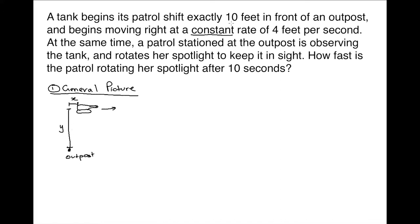I know that y is a constant 10 feet — that y distance doesn't change because the tank is only moving to the right. Likewise, I know how fast the tank is moving. The rate is a constant 4 feet per second, and since it's constant I don't have to worry about it changing. So dx/dt is going to be 4 feet per second.